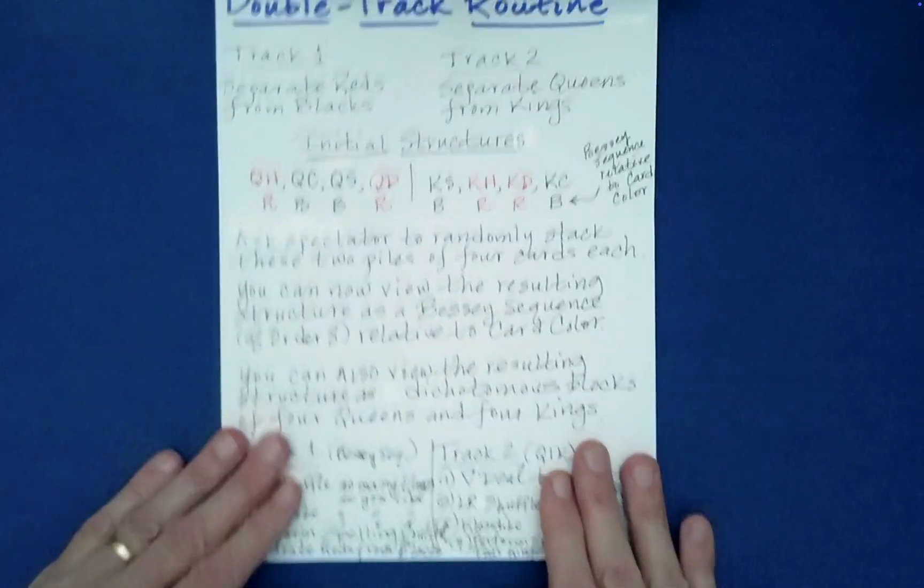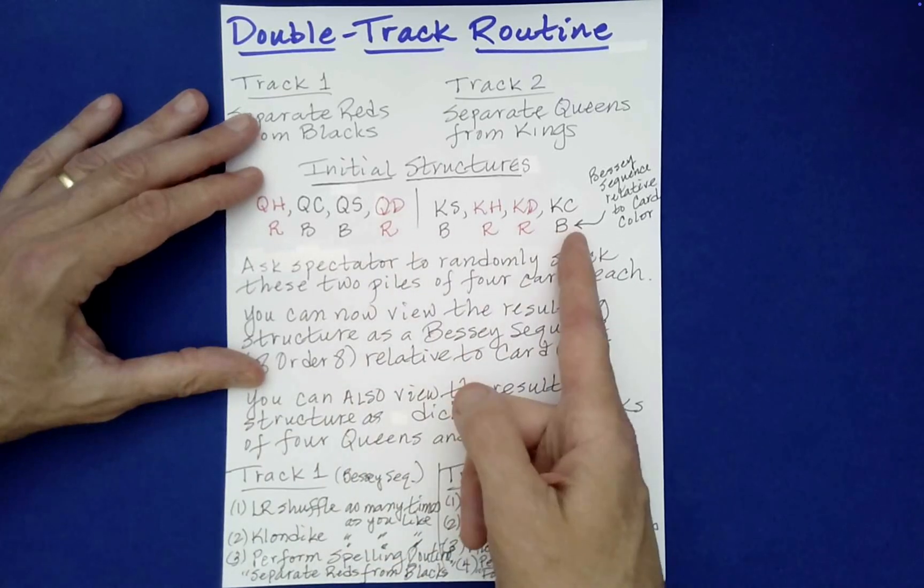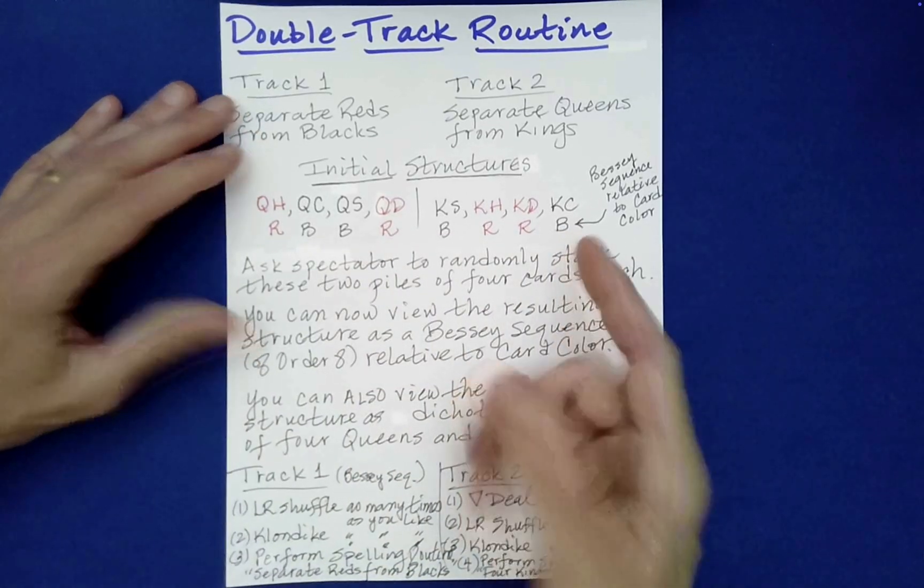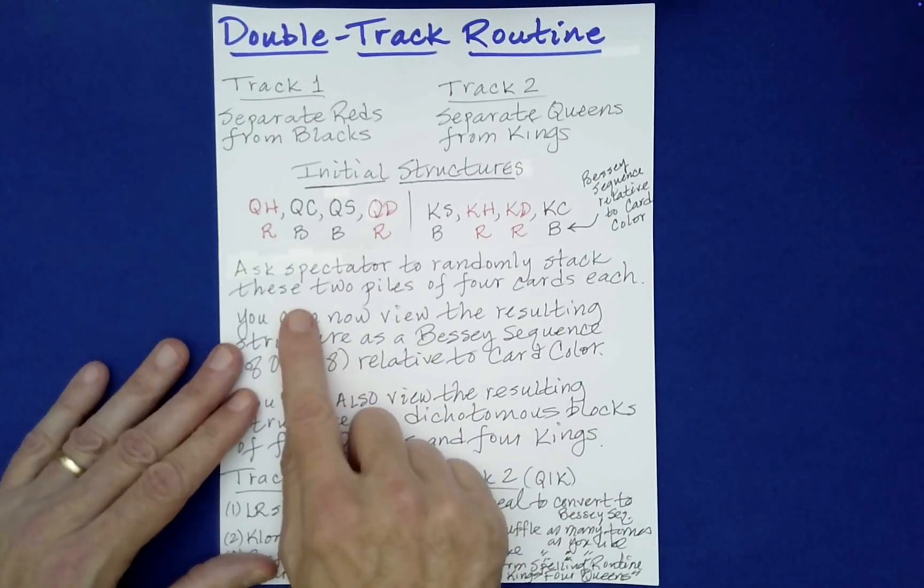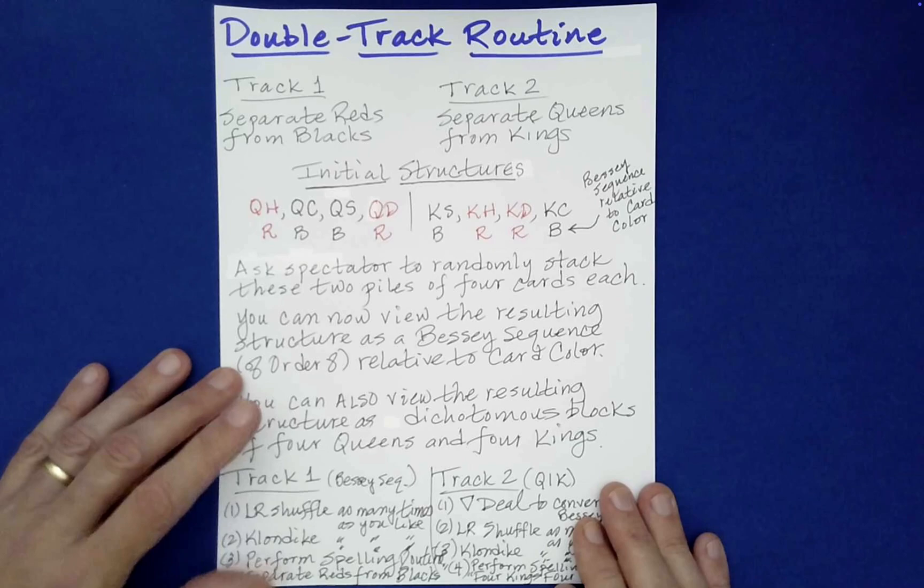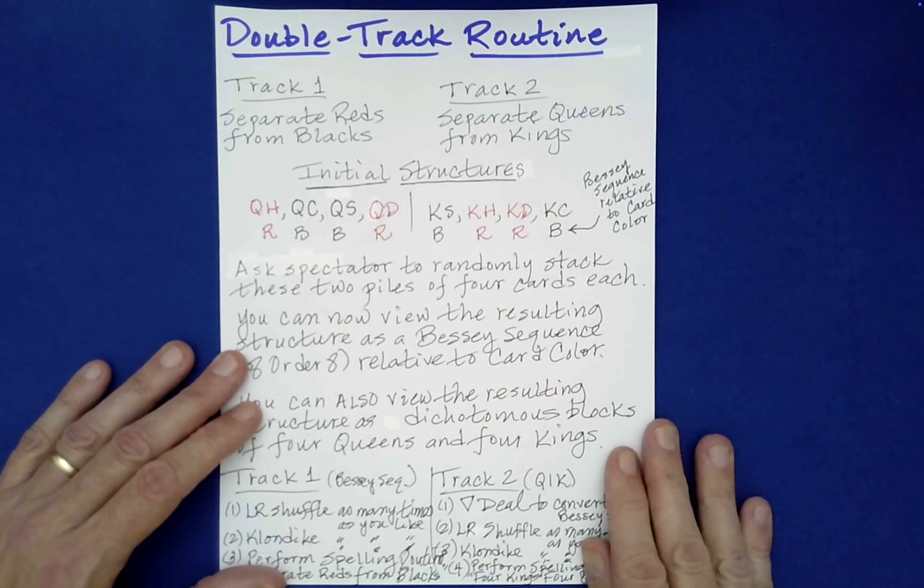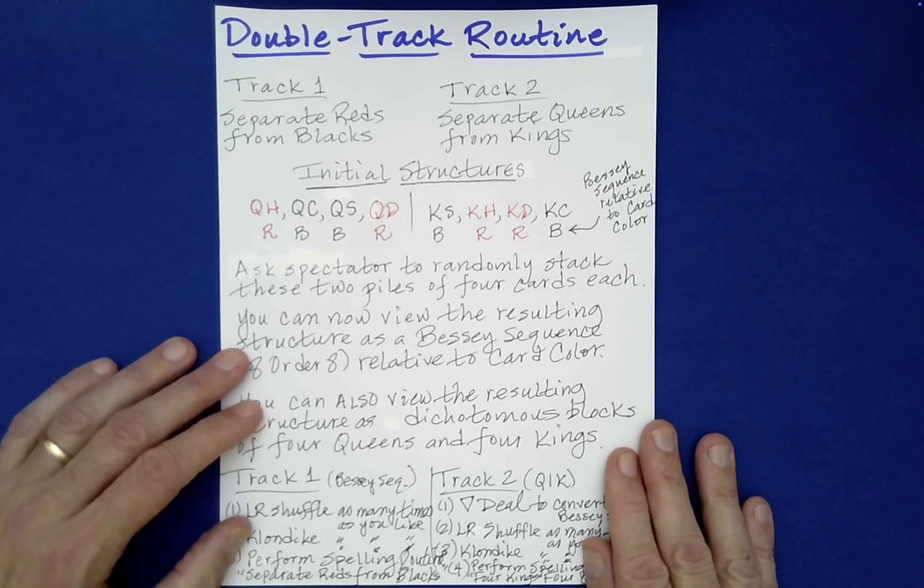So let me just show you that right up in its entirety. So you have the notes here to refer to. So you just begin with a Bessie sequence relative to card color, where first half are all queens, the second half are all kings. You ask for the spectator to randomly stack those piles of four.